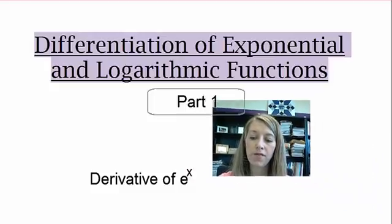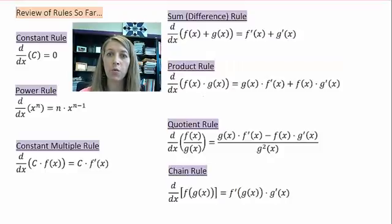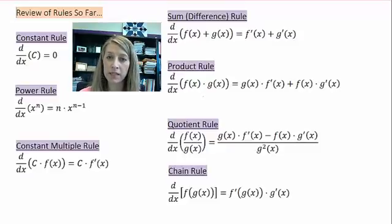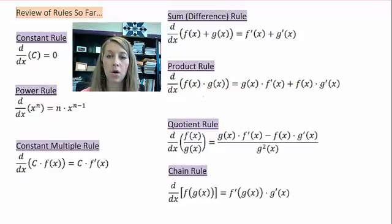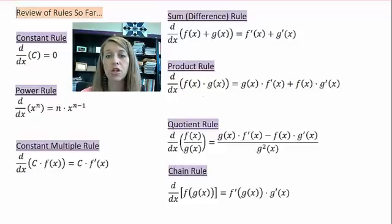Let's review the rules of differentiation that we know up until this point. We have very easy ones: the derivative of a constant is zero, the power rule we use all the time, the constant multiple rule where we can pull that constant out, the sum and difference rule, the product rule, the quotient rule, and most recently the chain rule. Don't forget these rules because we will be utilizing them in combination with the exponential and logarithmic rules.